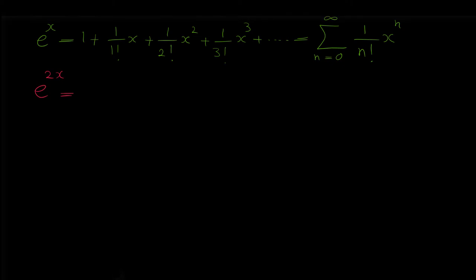We know that when we have the Maclaurin series of a function, we can replace x with different things like 2x, 5x, negative x, x squared, x to the 3, and so on. So for finding the Maclaurin series of e to the 2x, we can simply replace x with 2x.